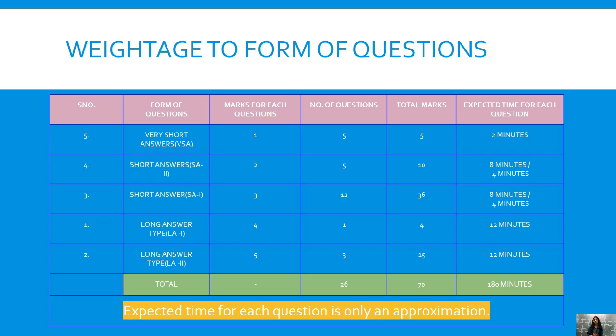Then we come to long answer type questions. These carry the maximum marks in your question paper. There are 2 kinds of long answer type questions: 4 marks and 5 marks. For 4 marks there will be only 1 question and for 5 marks there will be 3 questions. You have to divide your time accordingly. You need to see from where you start your question paper — from the beginning or from the end — and from wherever you start, you should definitely attempt it in a chronological order.